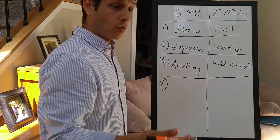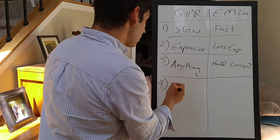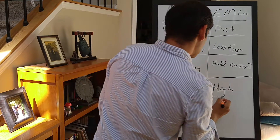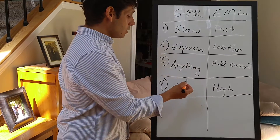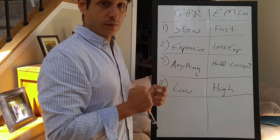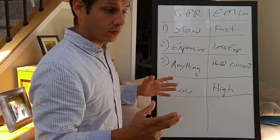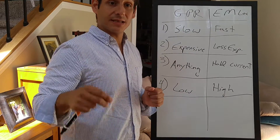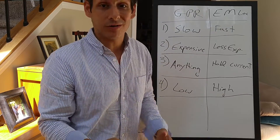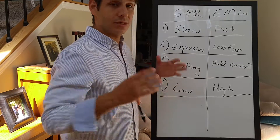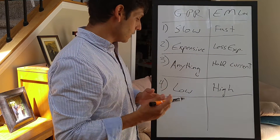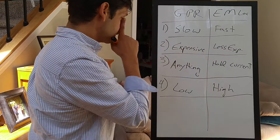Number four: maneuverability. GPR has low maneuverability while EM locators have high maneuverability, though this is changing. With GPR and a GPS unit, you don't necessarily have to use a cart system, which increases mobility. But EM locators are significantly more maneuverable — you could be in the middle of a dense forest and still locate a utility, moving freely around obstacles.